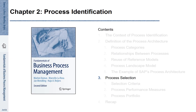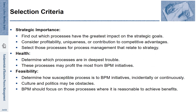Chapter 2, Section 3: Process Selection. We have learned that the process architecture of a typical company may include hundreds, sometimes thousands of different processes. How do we select the process that is best suited for being improved? There are different selection criteria that help us with that decision.